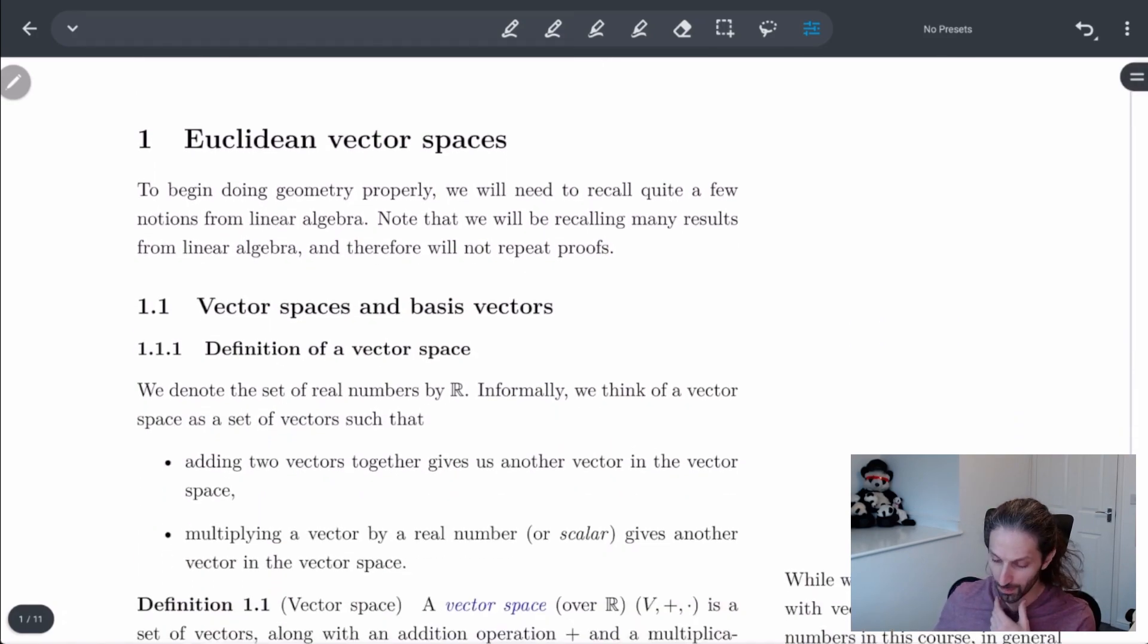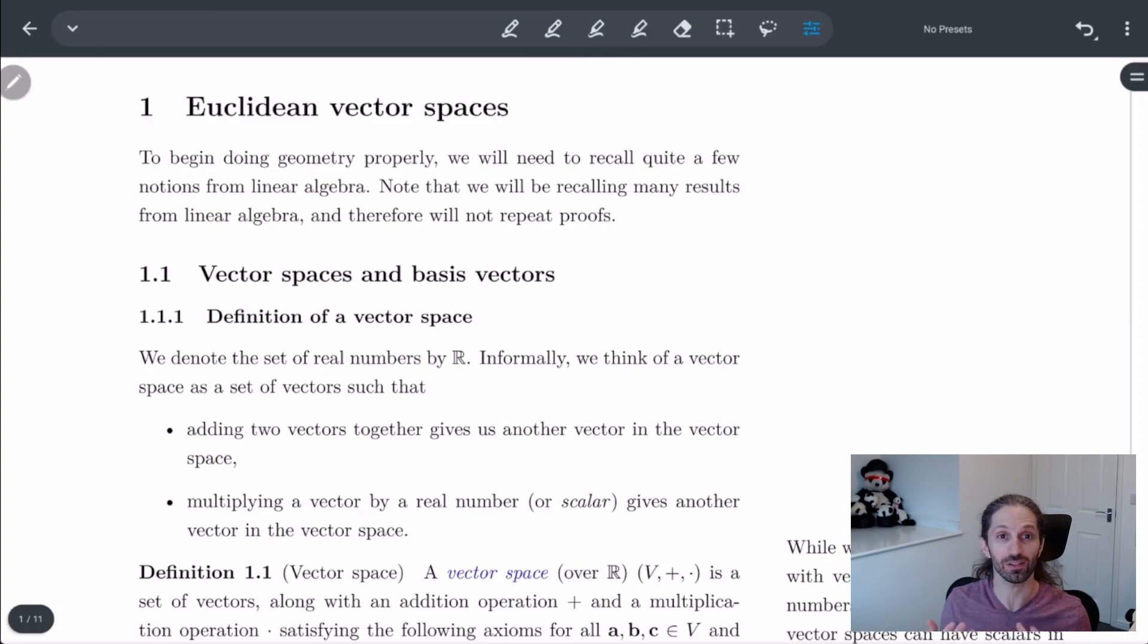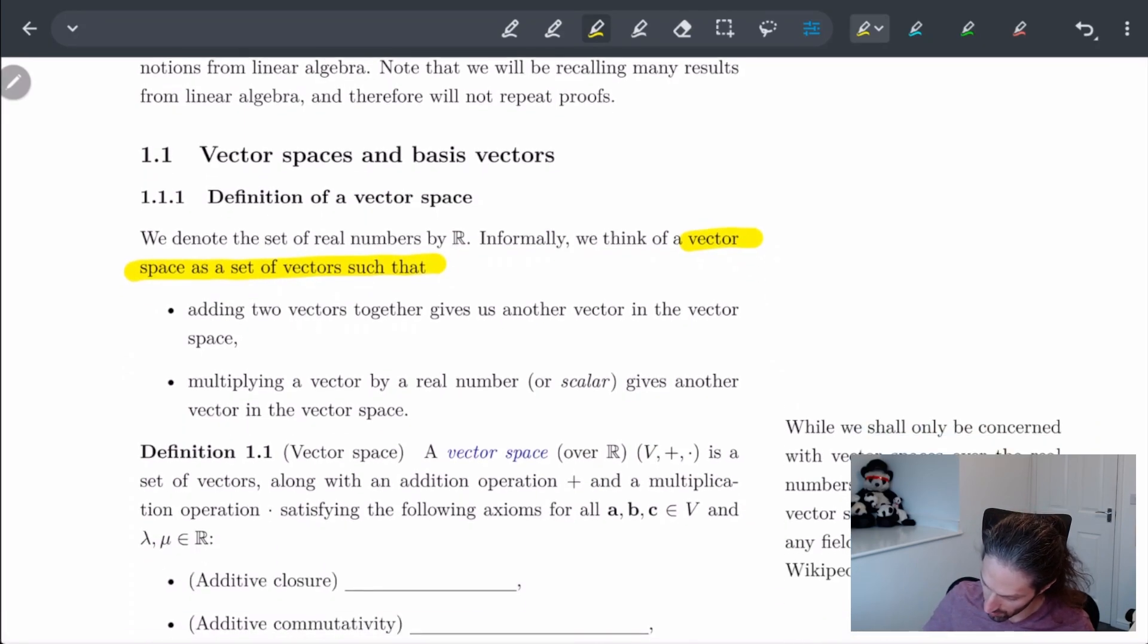So a lot of the beginning preliminary stuff is things that you've probably already seen in linear algebra. So we're not going to repeat a lot of the proofs, but we will go over the definitions so that you know what's happening and our notations. So the big thing is that we're going to be looking at things like vector spaces. So vector spaces, what we're basically thinking of, is just a set of vectors. And the main thing we want for the set of vectors is basically these two points.